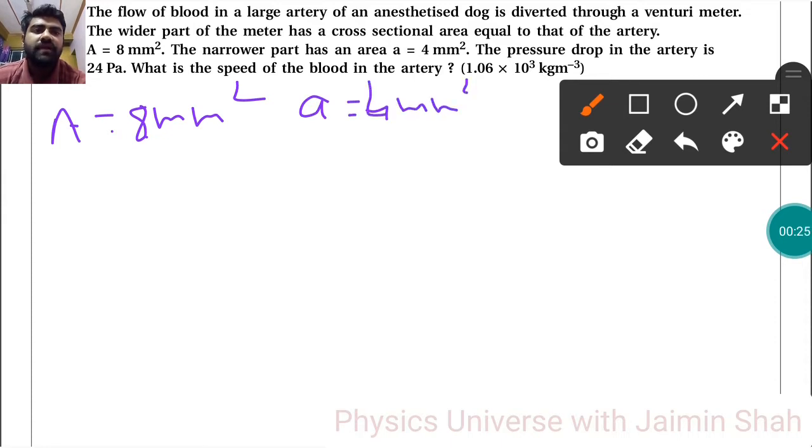So 8 and 4. The pressure drop in the artery is 24 pascal. What is the speed of the blood in the artery?